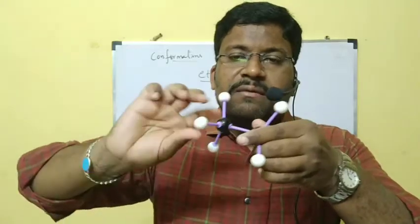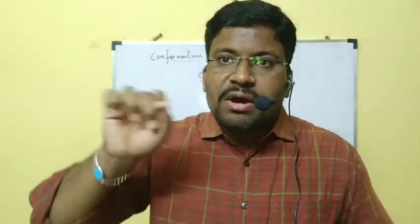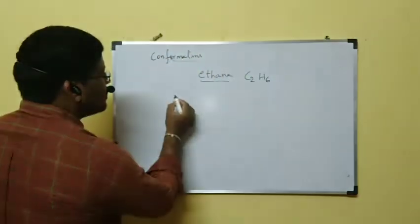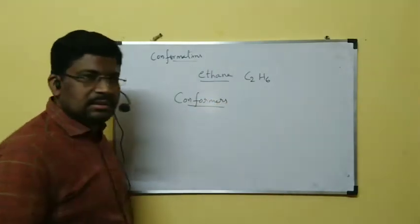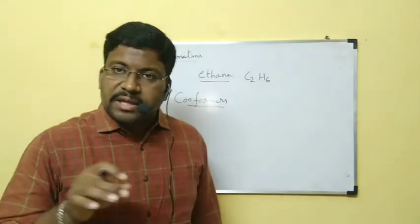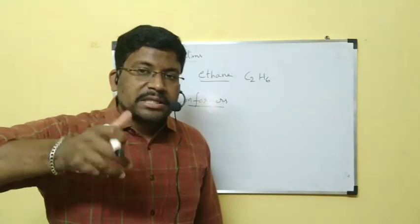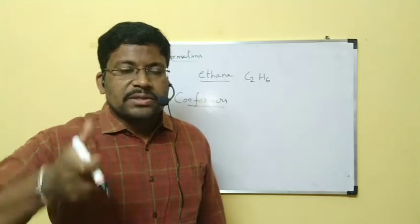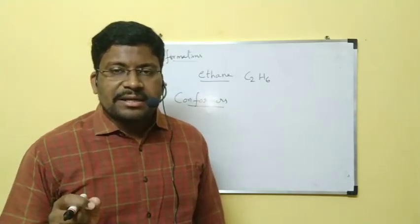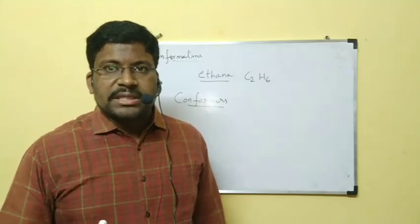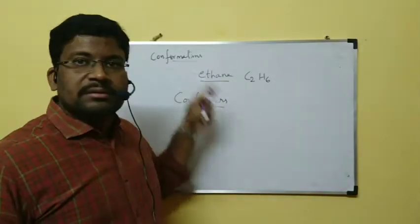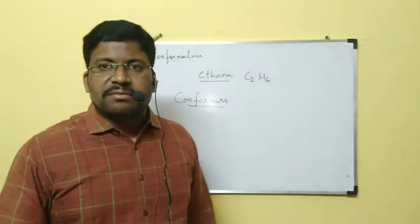Because of this rotation, different forms of ethane we are getting — but the structure will not be changed, bonds will not be changed. These different forms are called conformers. The process is also called conformations. Conformers and conformations are both the same.